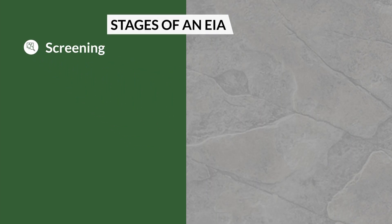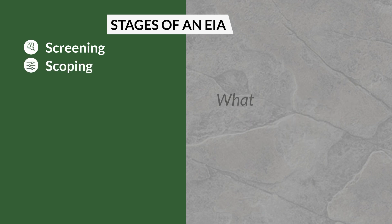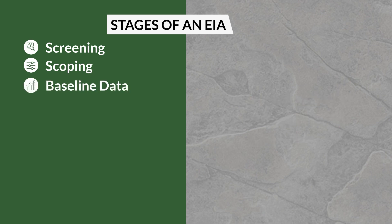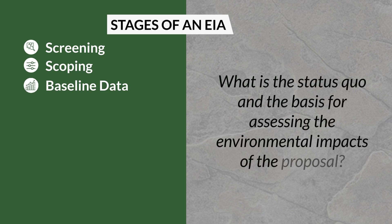Stage 1: Screening — Is the project one for which an EIA is necessary? Stage 2: Scoping — What environmental impacts need to be examined? Stage 3: Generation of baseline data — What is the status quo and the basis for assessing the environmental impacts of the proposal?